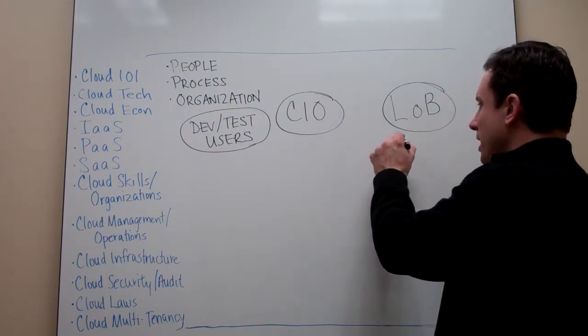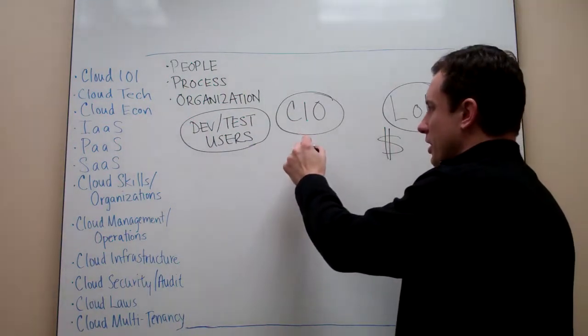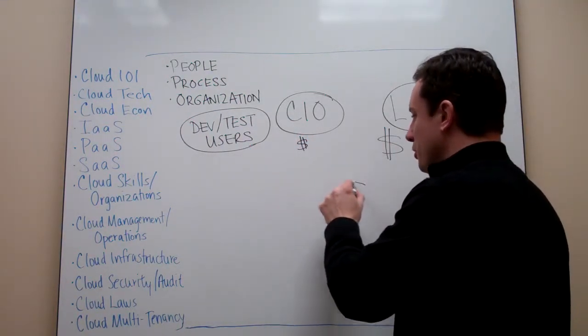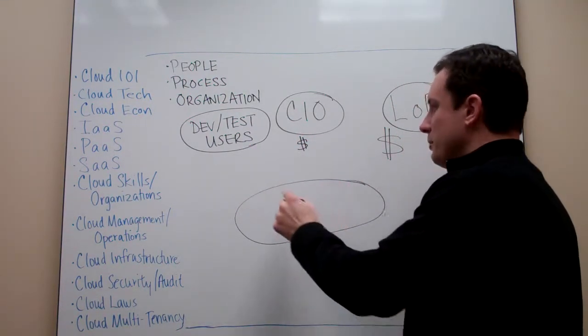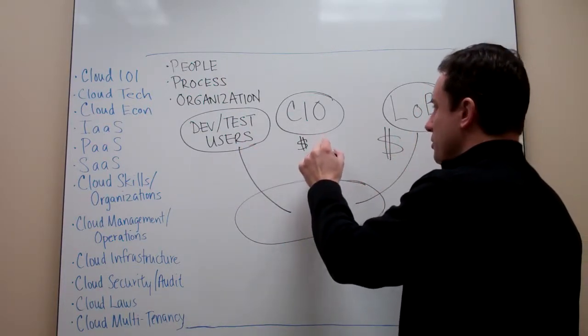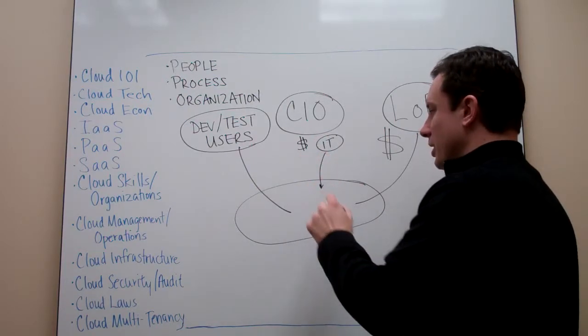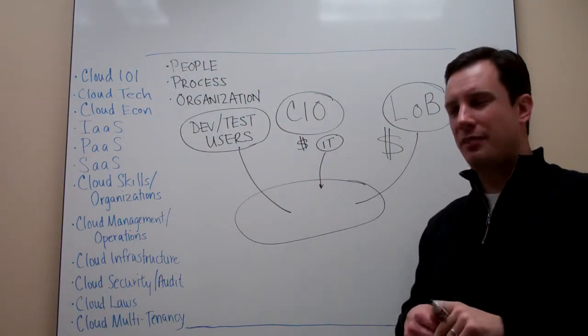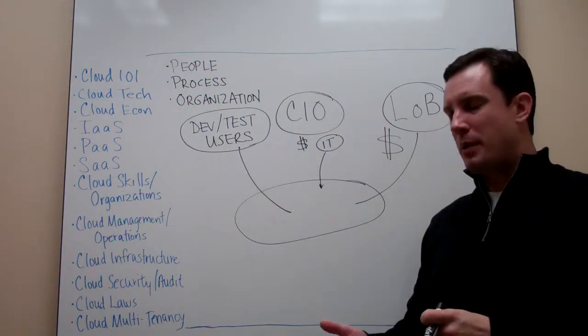And the CIO has to be able to say, well, money may come from here, and I'm also going to have a certain amount of money, and I've got to be able to create an environment that's going to service these people and also allow the IT organization to help service that as well.